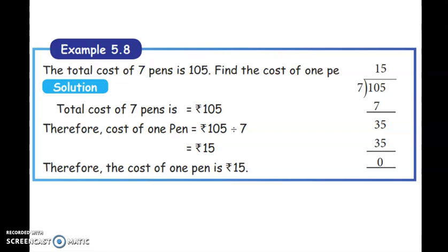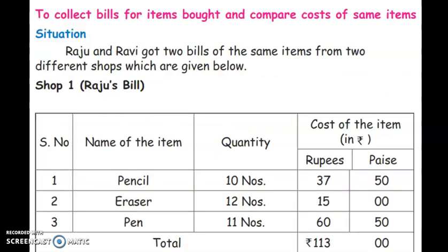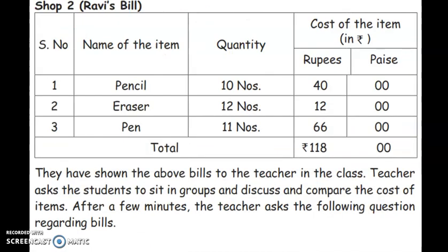Divide them. To collect bills for items bought and compare costs: pencil — 10 numbers, eraser — 12 numbers, pen — 11 numbers. Cost of each item: pencil Rs. 50, eraser Rs. 50, pen Rs. 60. Quote them at Rs. 50. These are the rounded bills.